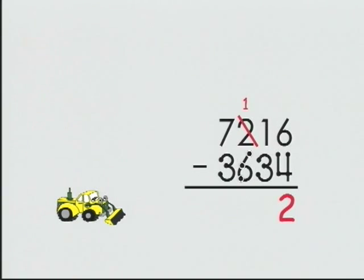Let's trade one one hundred for ten tens, giving us eleven tens. Now let's take three tens from eleven tens. Eleven, ten, nine, eight, record.